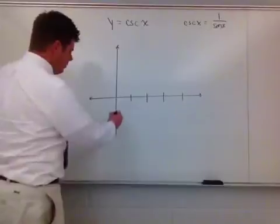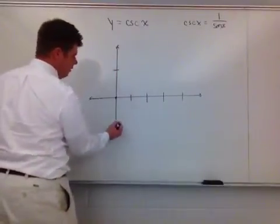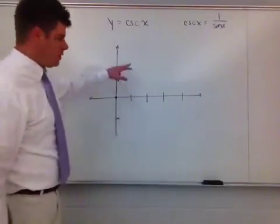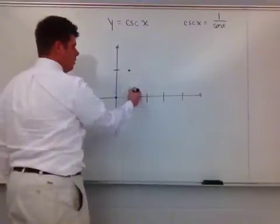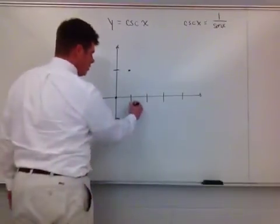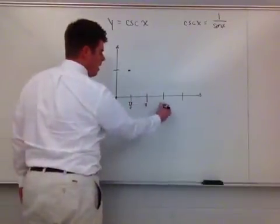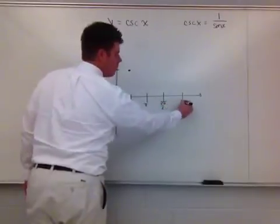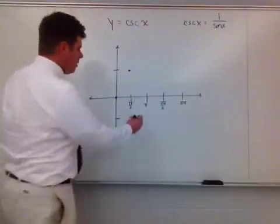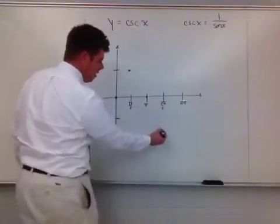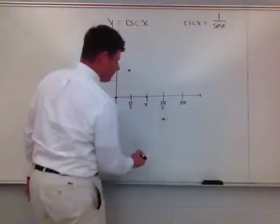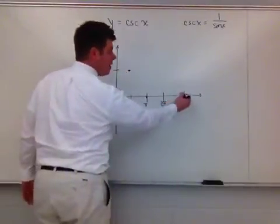The sine curve - sine of 0 is 0, and the sine of π/2 is 1, so it goes up to 1. The sine of π, so this is π/2, π, 3π/2, and 2π. Sine of π is 0. Sine of 3π/2 is negative 1, and the sine of 2π is 0.